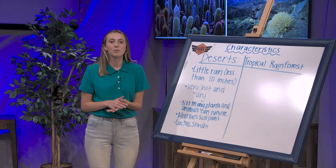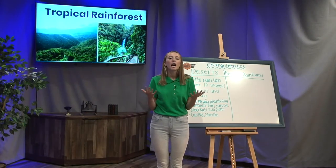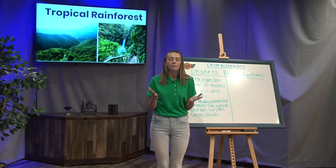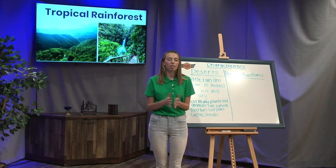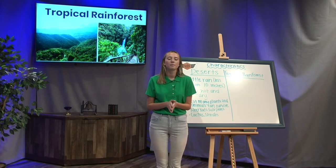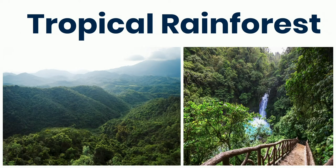Let's slide to tropical rainforests and start learning about what tropical rainforests are and their characteristics. Here are some pictures of a tropical rainforest. I want you to observe the pictures — look at them, think about them — and pause the video to think about what different characteristics you see in tropical rainforests. Is it hot looking? Do you think there's a lot of animals that live there? Make some predictions and talk to people around you. Pause the video now.